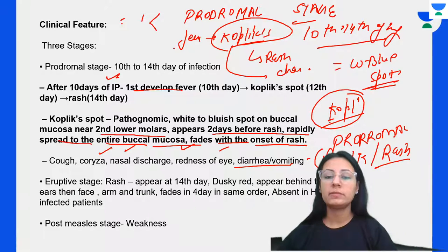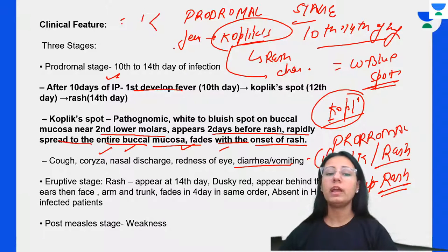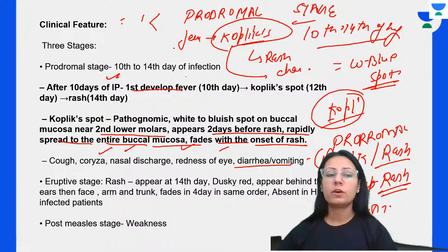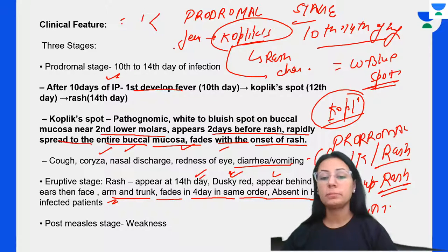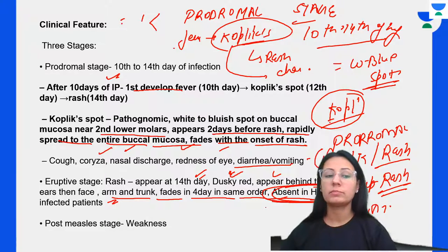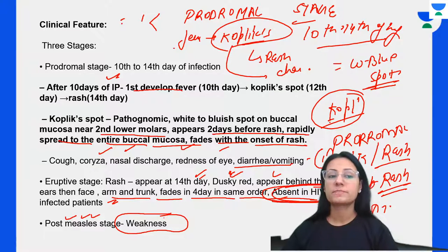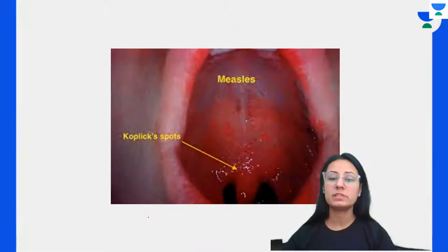Next is the eruptive phase: on the 14th day, the rash appears — dusky red, appearing first behind the ears, then the face, then the arms. The rash fades by the 4th day. Measles rash is absent in HIV-infected patients. Then comes the post-measles stage, characterized by generalized weakness.